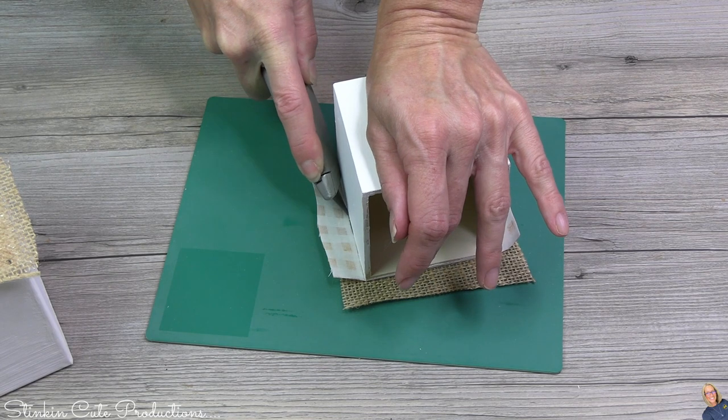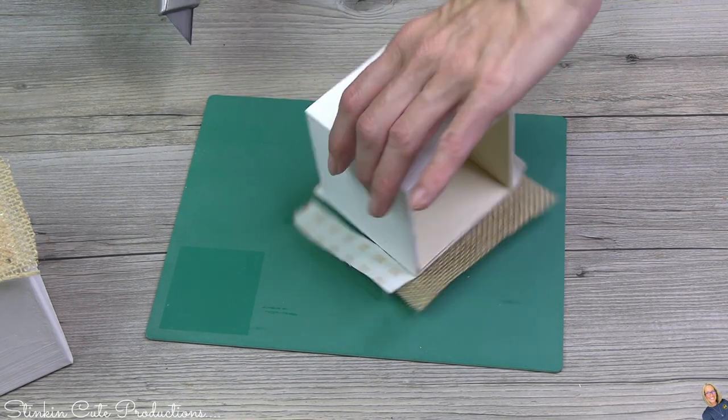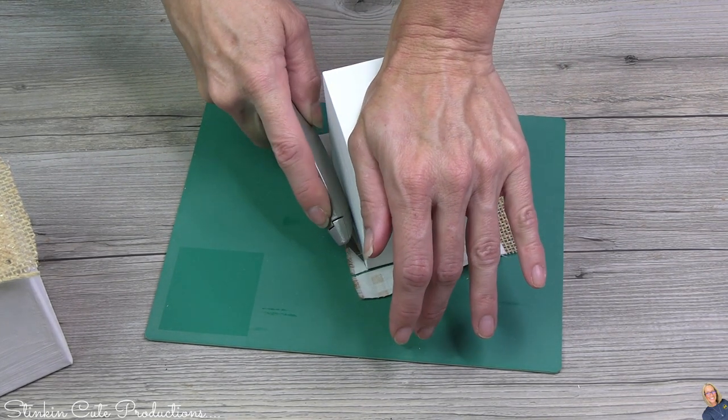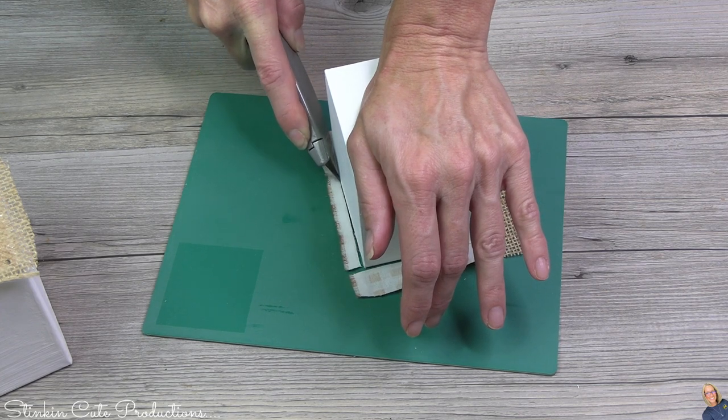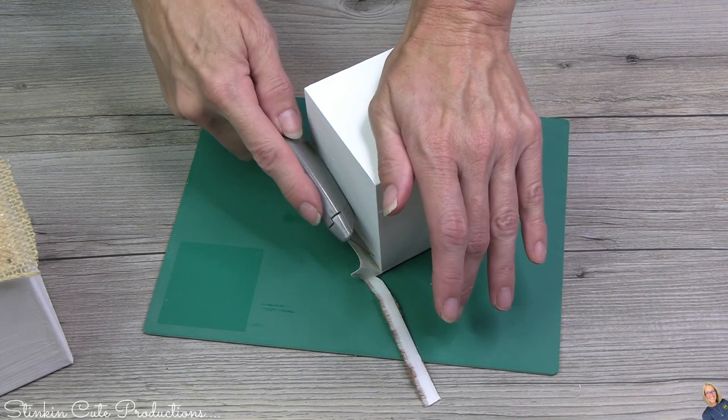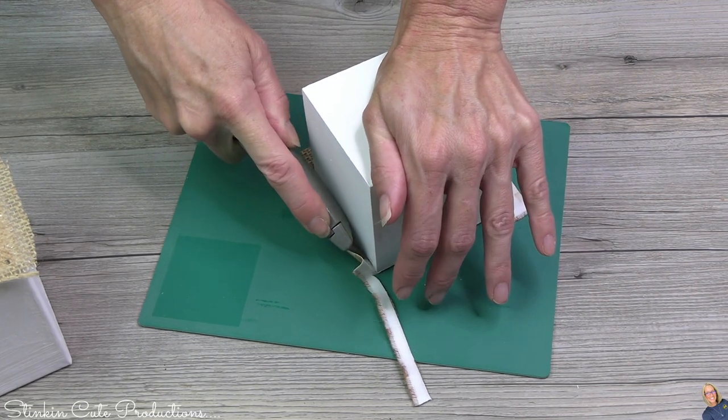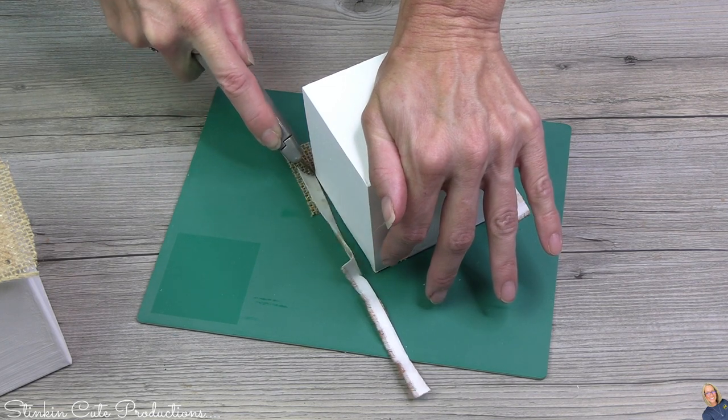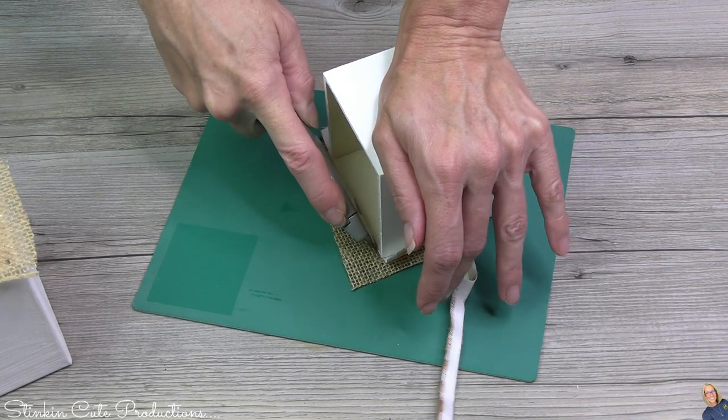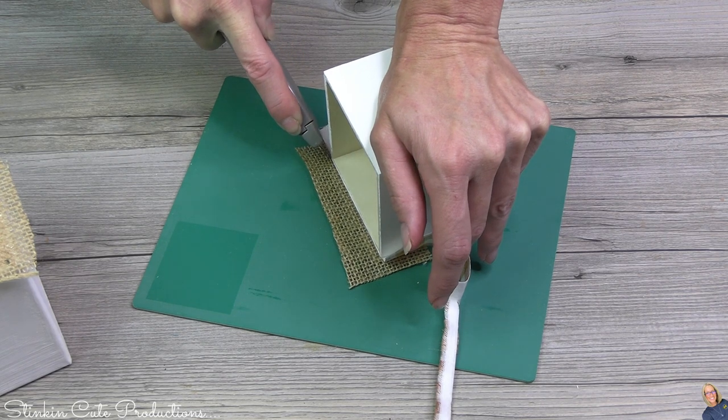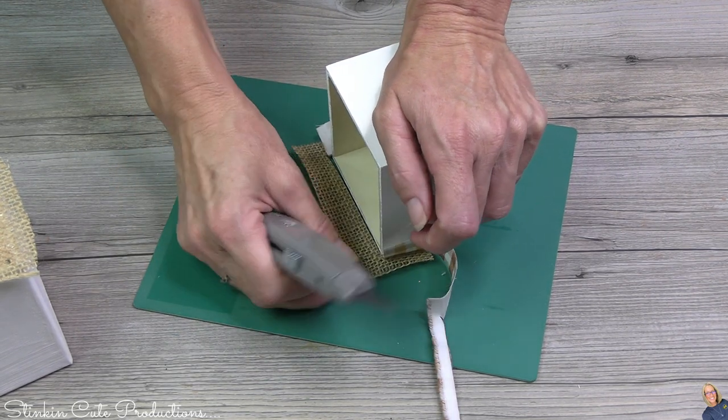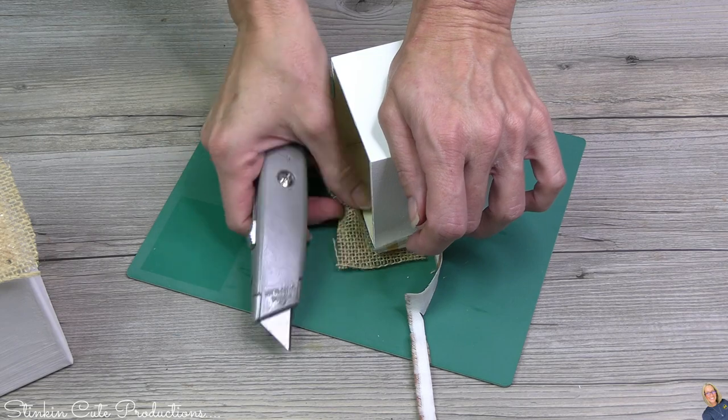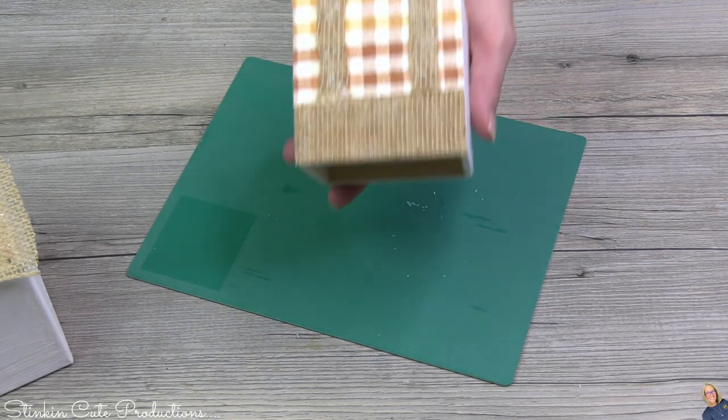Once your fabric and burlap is good and dry, you're good to go to cut off the excess. Now I find that it is easiest to do it using a fresh straight razor blade versus using scissors. If you try to use scissors, you're not going to get a good, clean, close enough cut to the box. So by using a razor, you can use the box as a guide and you're going to get a nice clean cut.